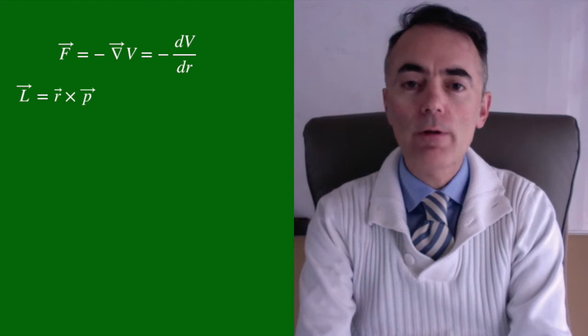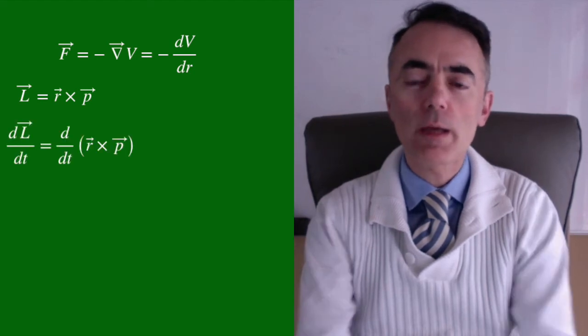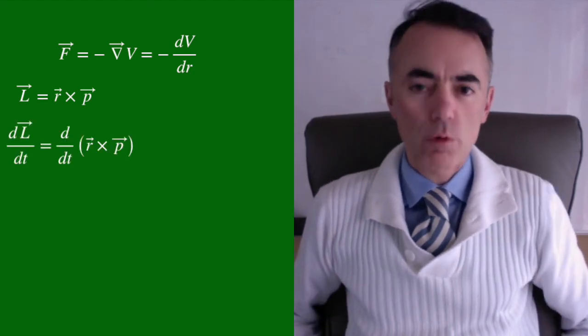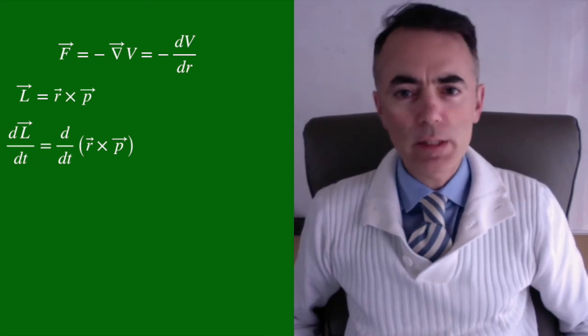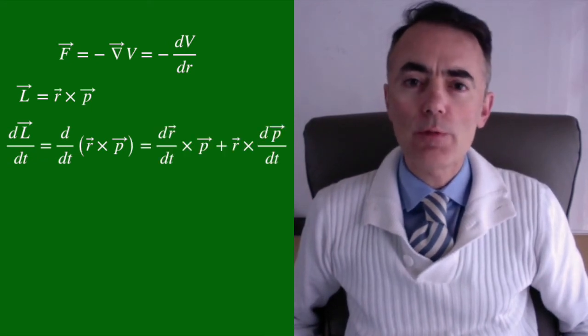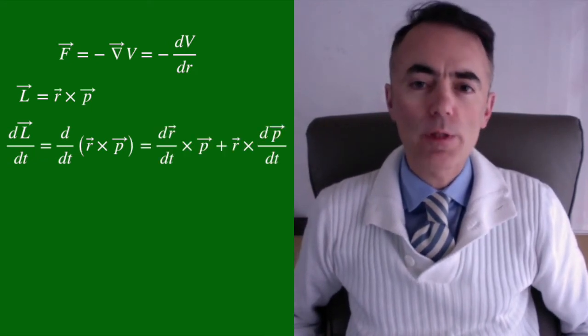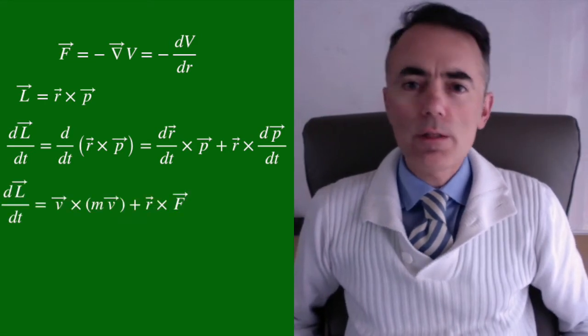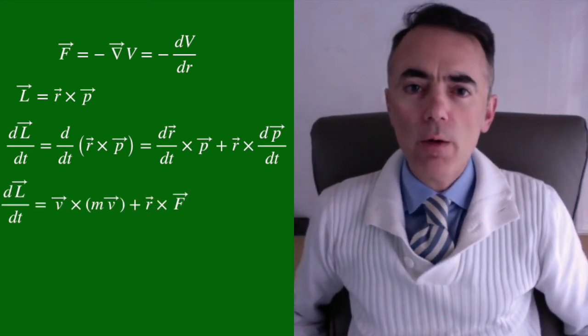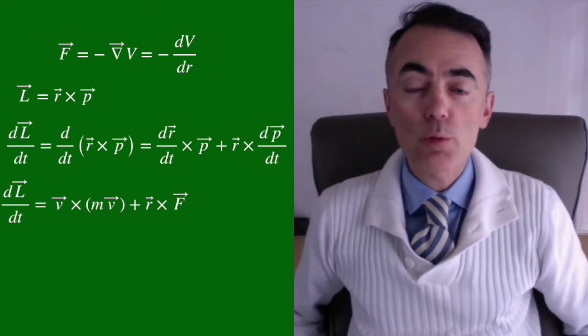Let's now derive the angular momentum with respect to time for a central force. The derivative is dr/dt times p plus r times dp/dt. This is v times p plus r times F, but now is when the interesting part comes to play.